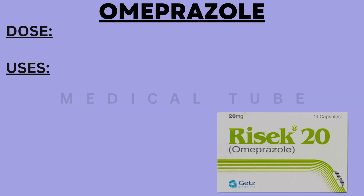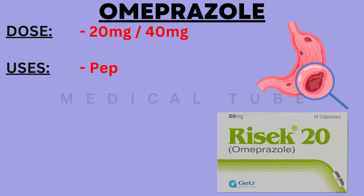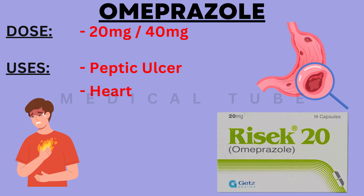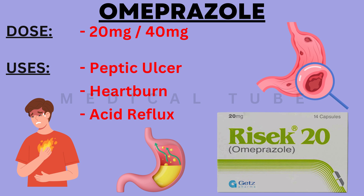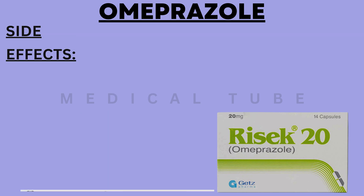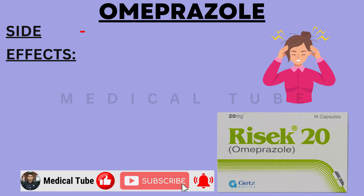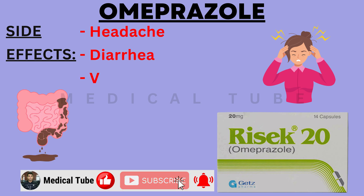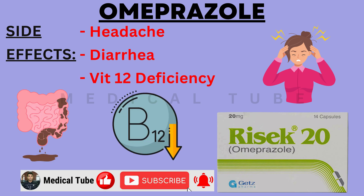The next drug is Omeprazole. The dose is 20 mg or 40 mg. It is used in peptic ulcer, heartburn or acid reflux. The side effects of Omeprazole are headache, diarrhea and vitamin B12 deficiency.